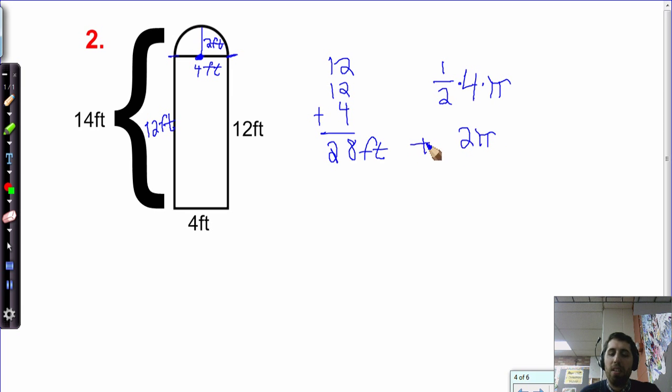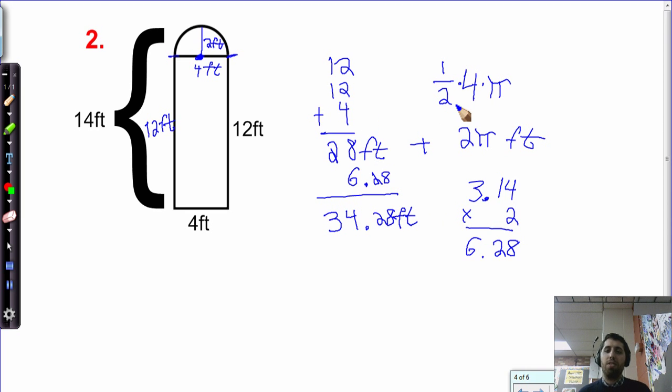So it's 28 plus 2π. 28 feet plus 2π feet. That's the total distance. If we wanted to estimate it, we could say π is equal to 3.14 as an estimate. If we multiply that by 2, we get 6.28. If we add this all together, we'll get 34.28 feet. That's an estimate if I ask you to estimate it. Or you could just leave it as 28 feet plus 2π feet. We know we're going to add some extra, but I would probably ask you to estimate that.